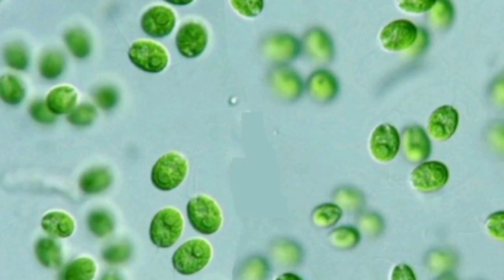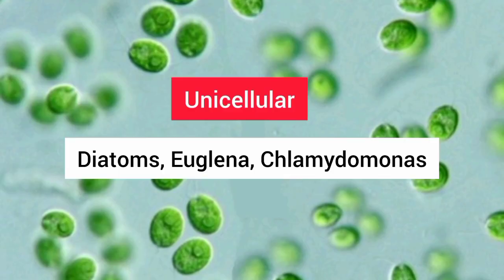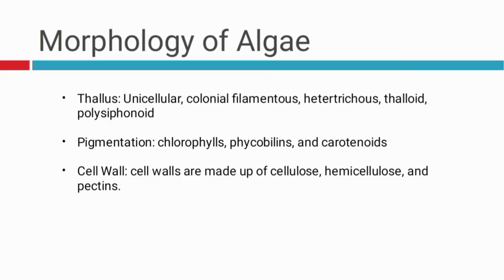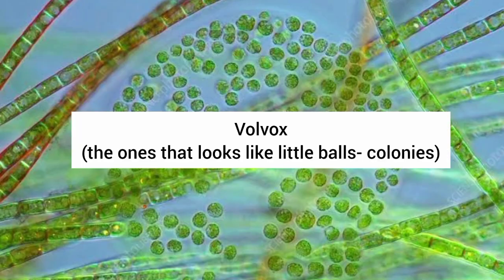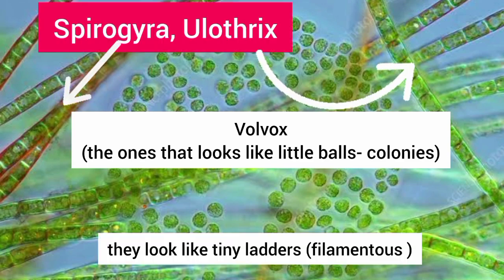For the unicellular algae, we have the diatoms, the euglena, and the Chlamydomonas. Then for the colonial, we have the Volvox. Then for the filamentous, we have the Spirogyra and the Ulothrix.